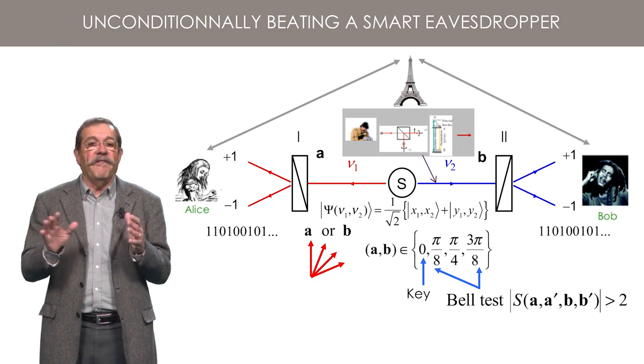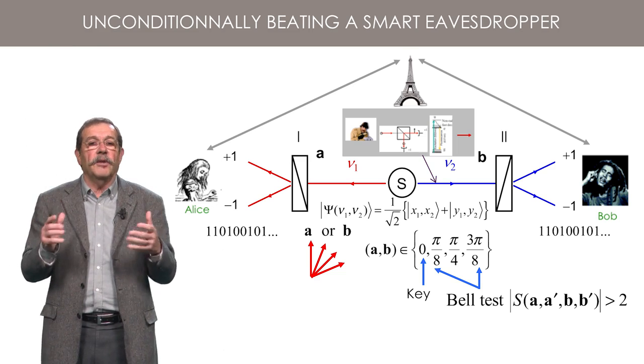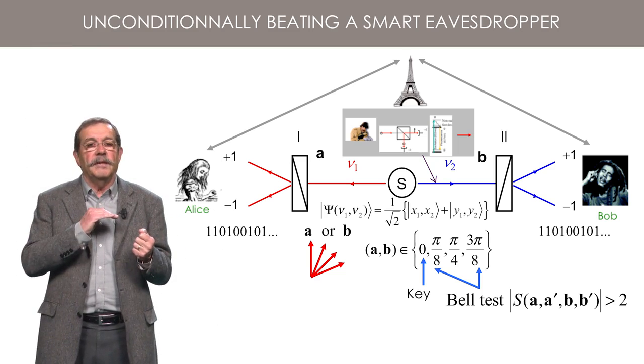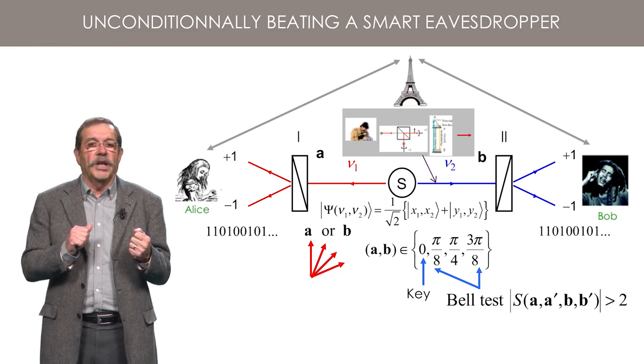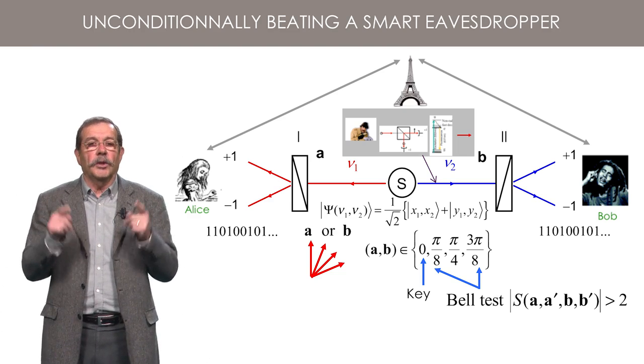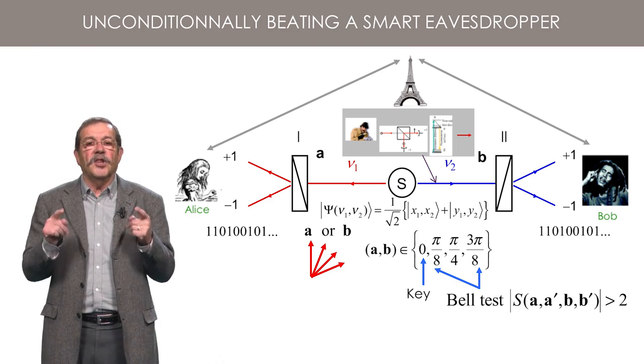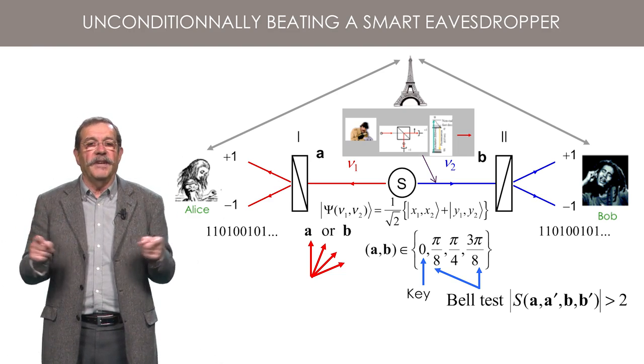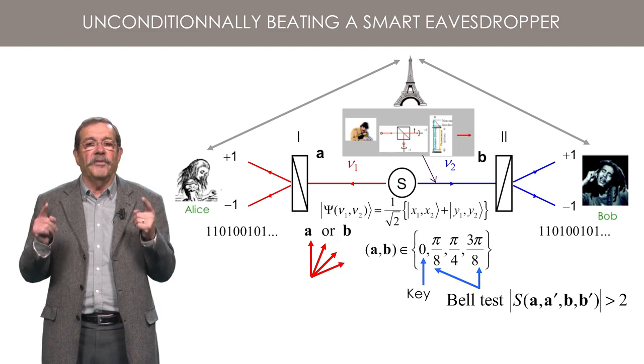In contrast, if they find some correlation whose S combination violates Bell's inequalities, they can be sure that there is no spy on the quantum channel. This is called an unconditional security test since it does not rely on any model allowing one to predict in advance which correlations they should find.